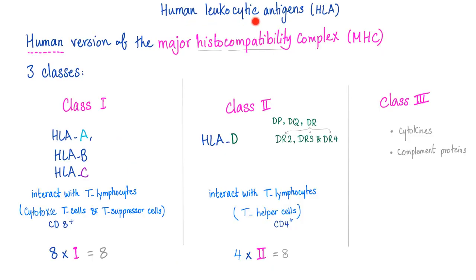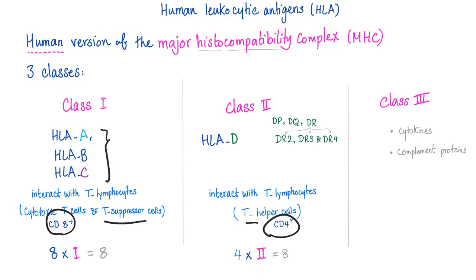We started talking about human leukocytic antigens in the previous video. They are antigens on the surface of the leukocytes in human beings. We have three classes of major histocompatibility complex — class 1, 2, and 3. We care about 1 and 2 right now. In class 1 we have HLA-A, B, and C. They interact with the CD8 T suppressor cell. Class 2 interacts with the CD4 cell — the mnemonic is 8×1=8 and 4×2=8.